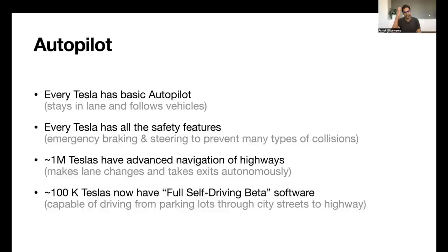In addition to these basic features, about a million Teslas since 2019 have more advanced navigation on the highway. This stack would be able to perform lane changes by checking the blind spot, take exits off the highway, handle flower leaves, and then merge back onto highways. And finally, around 100,000 Teslas now have the full self-driving beta software. This is our most advanced driving software yet and is capable of handling driving all the way from the parking lot through city streets into the highway.